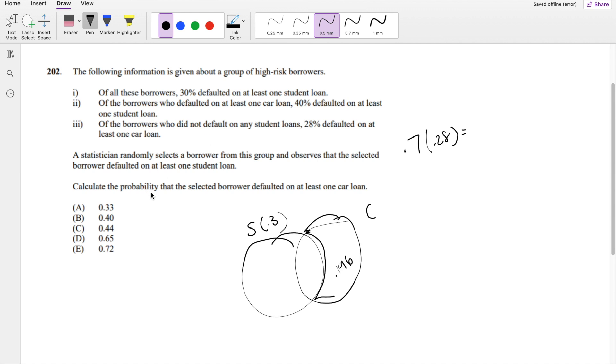And we're looking for the probability, given that they defaulted on one student loan, what is the probability that they defaulted on a car loan? So this is equal to the probability of C and S divided by the probability of S, by the formula of conditional probability.